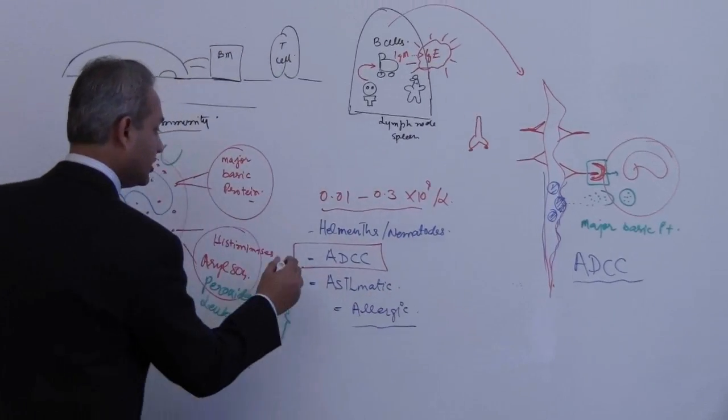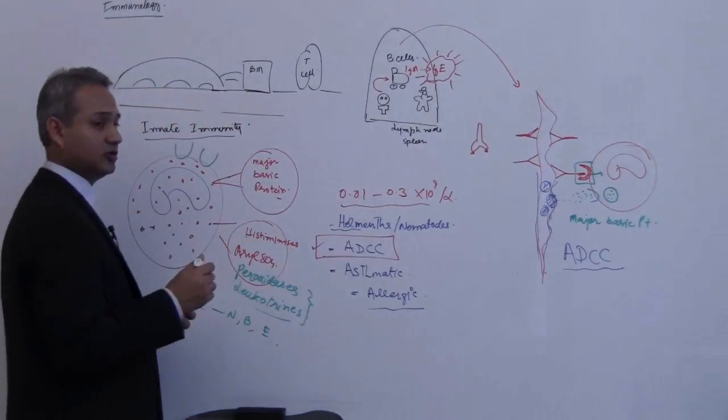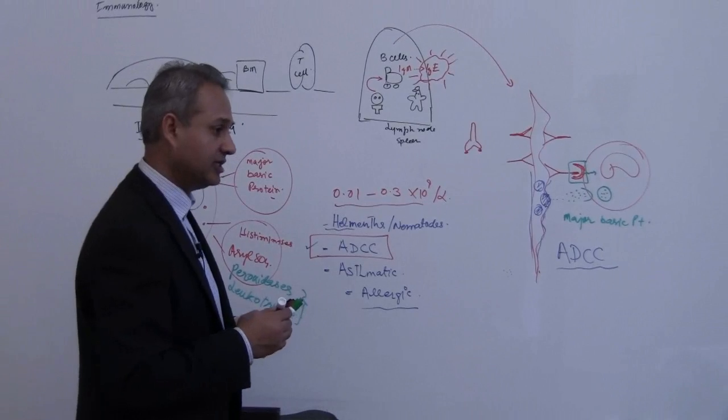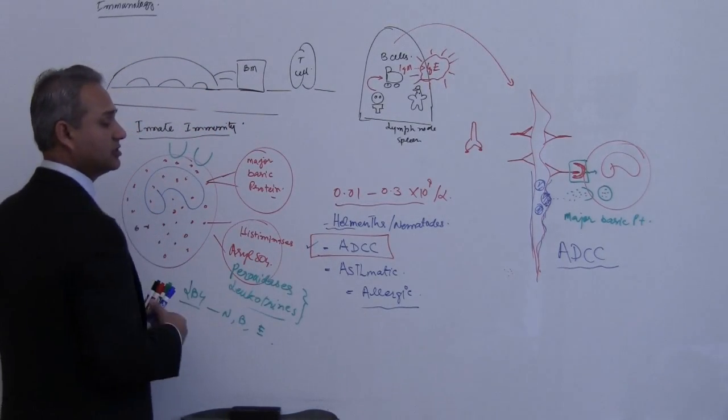So we have talked about the ADCC. ADCC is used for the helminths and nematode infections for stranguloids and for trichinella. Then let us see what is the role of the eosinophils in the asthma.